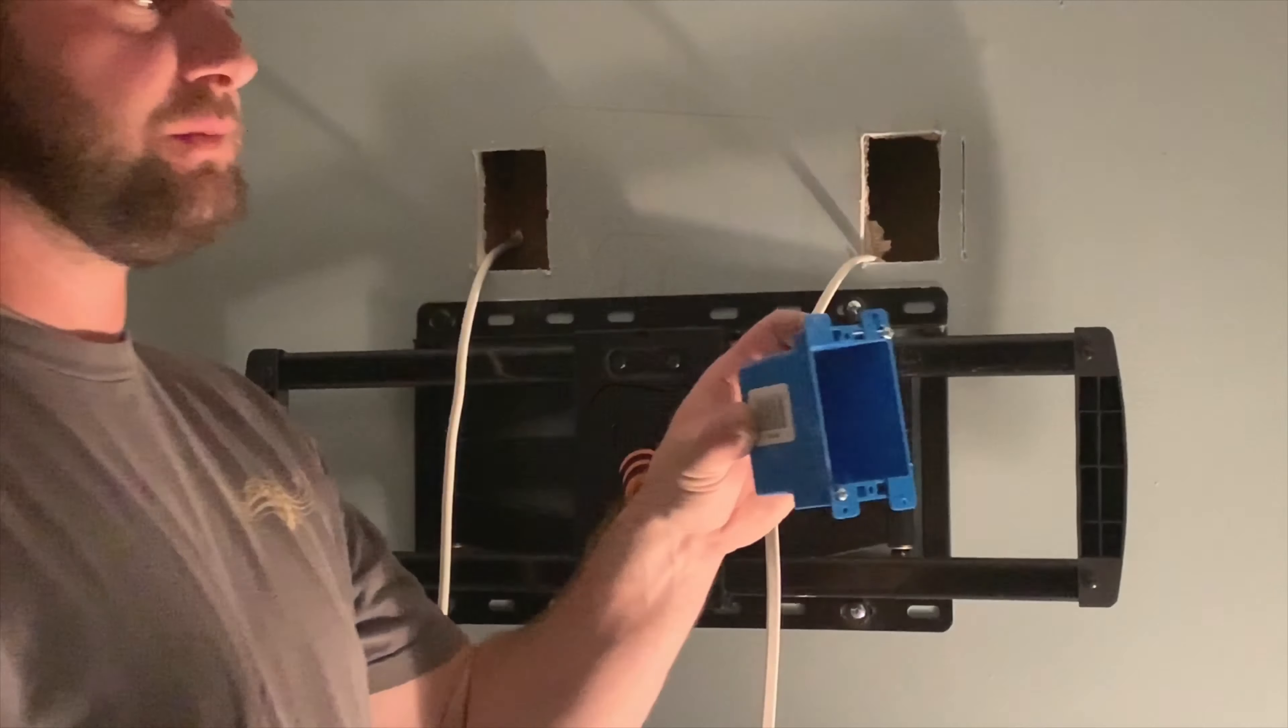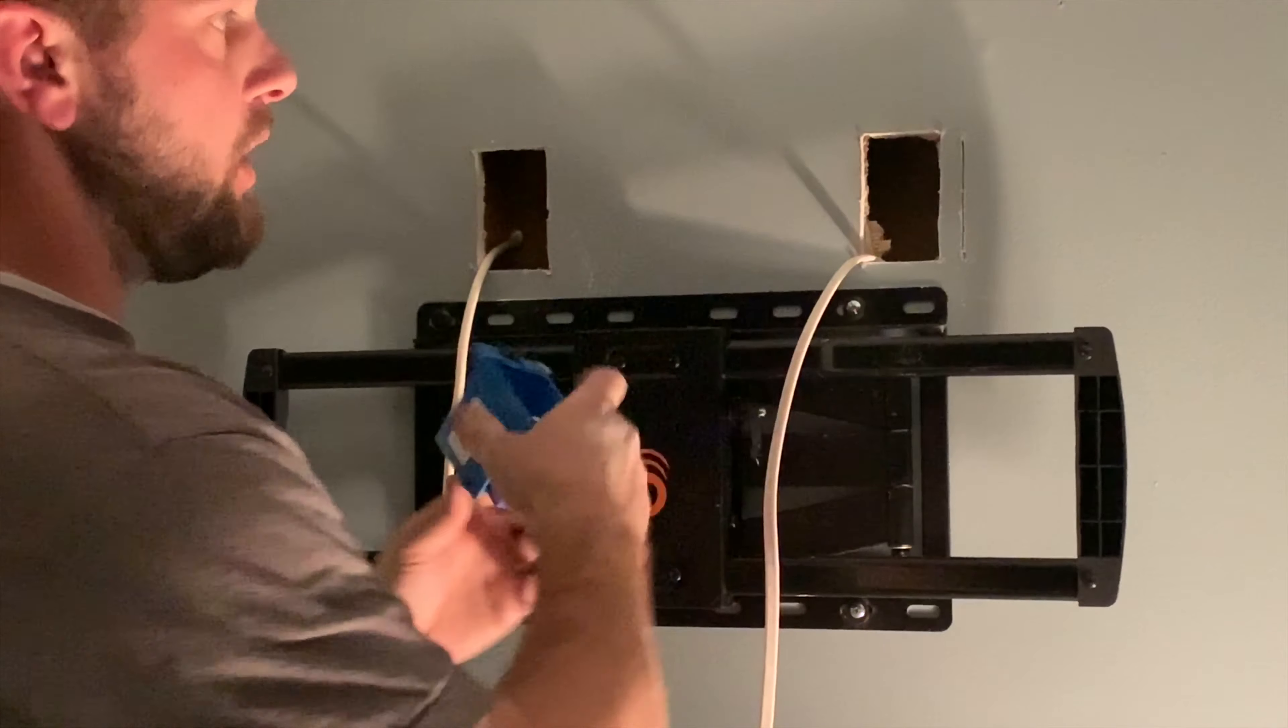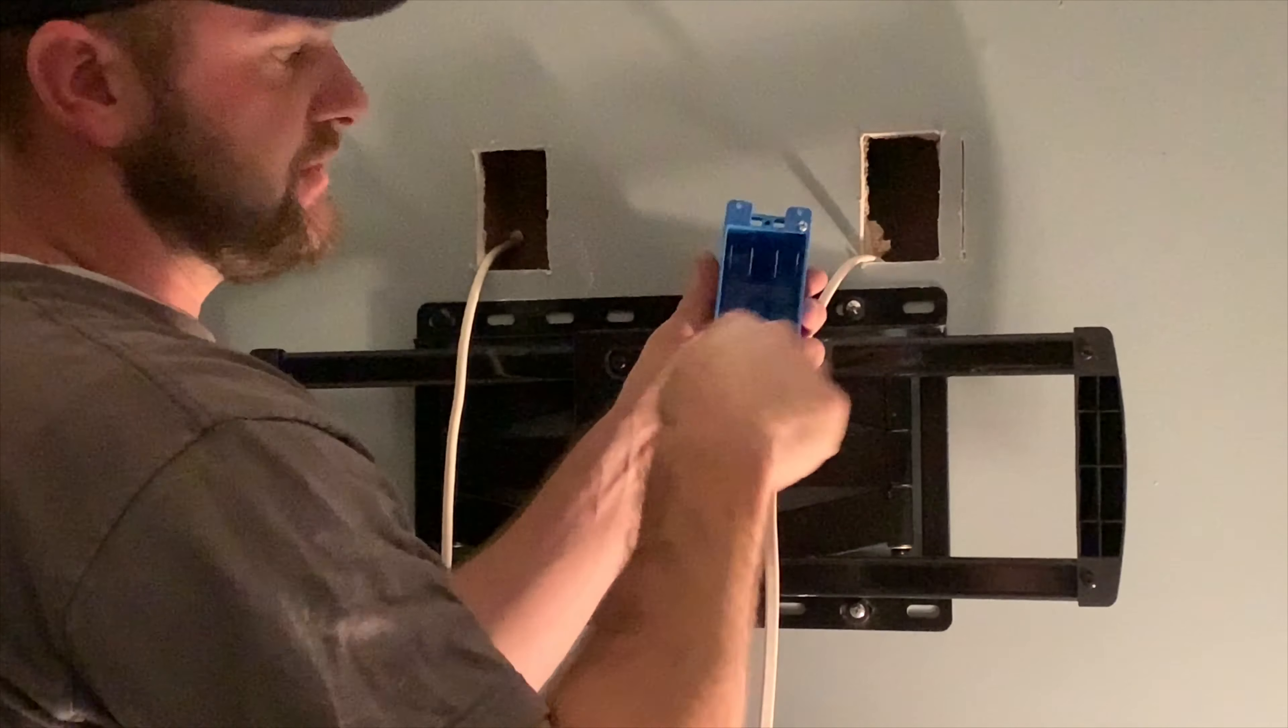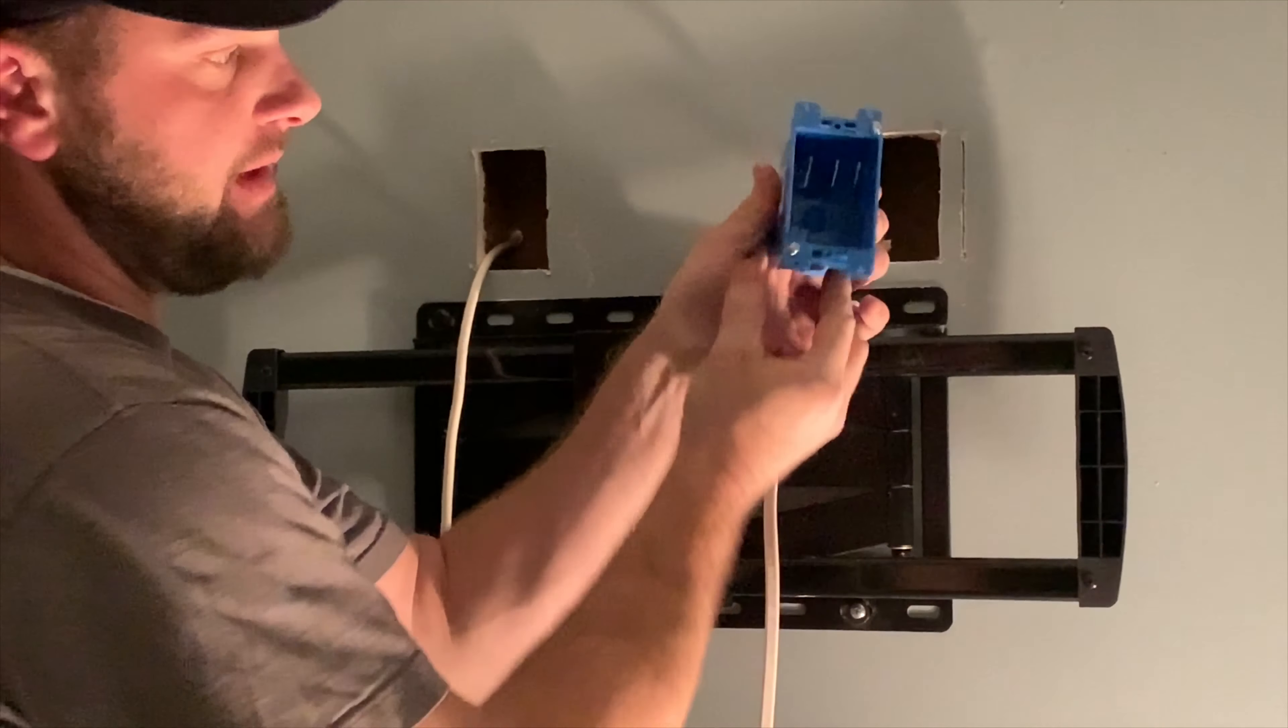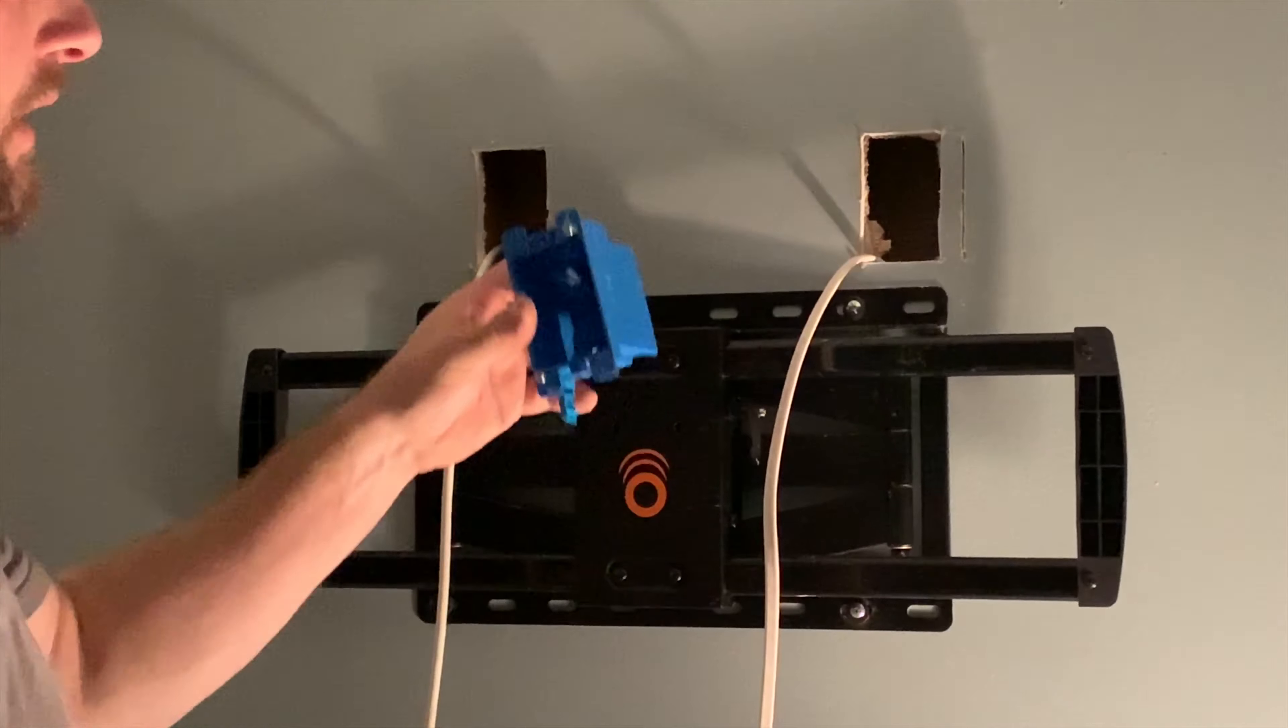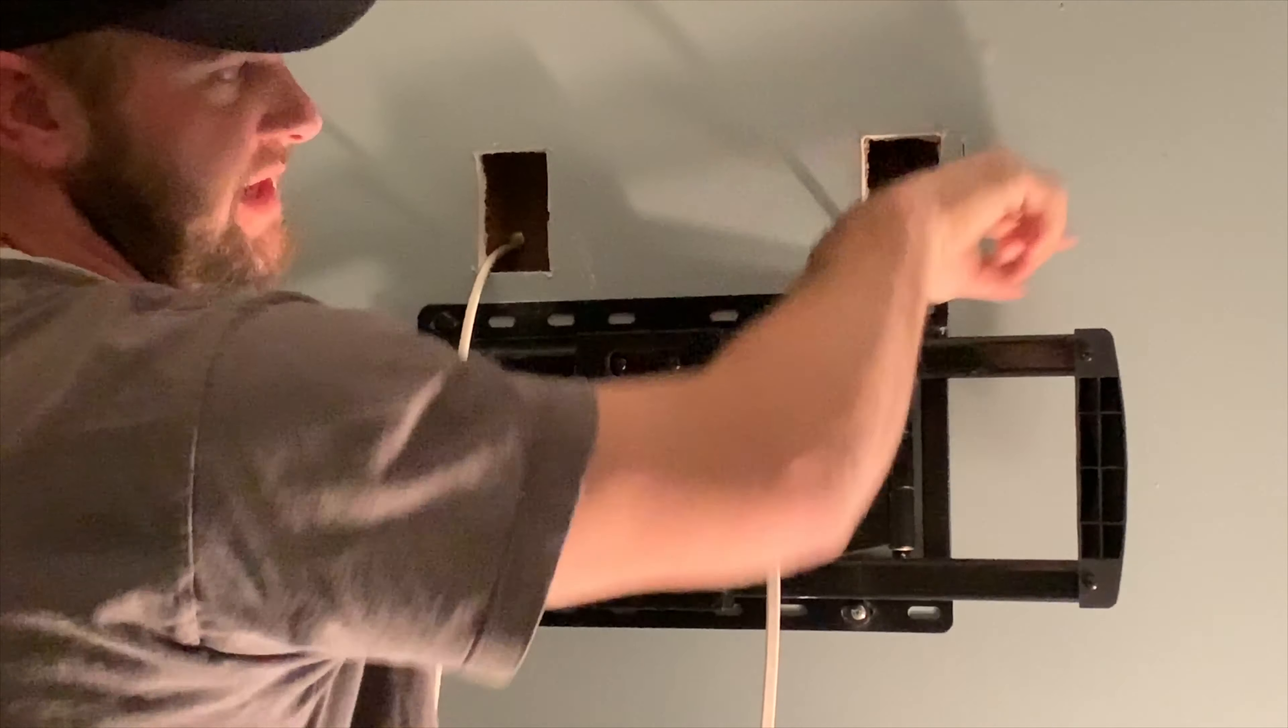So this is what we call an old workbox. It has these tabs that flip up. So all you do is you cut a hole, slide this in, tighten the screws, and those tabs flip and you can essentially put an outlet anywhere. This is called an old workbox. New workboxes are before the drywall and there's nails that go into the stud.